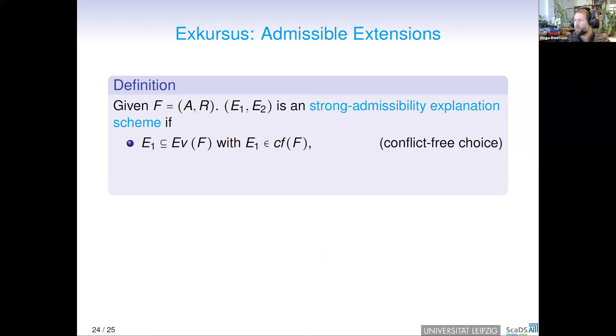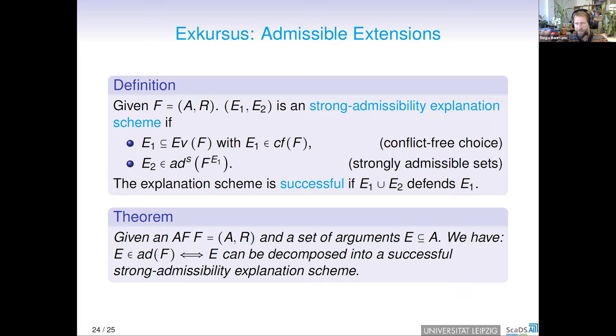Just at the end, we also considered admissible extensions, and we have a similar characterization theorem, and you see it here at the bottom. A set is an admissible set or admissible extension if and only if it can be decomposed into a successful strong-admissibility explanation scheme. At the bottom here, you see the definition of a strong admissibility explanation scheme, and I will not go into the details. Just as a take-home message here, the role of grounded semantics with respect to complete semantics is played by strongly admissible sets in case of admissible extensions.